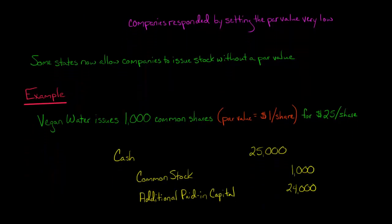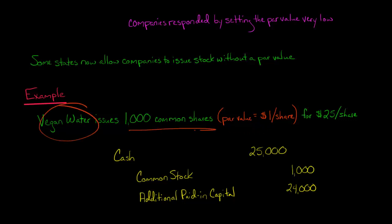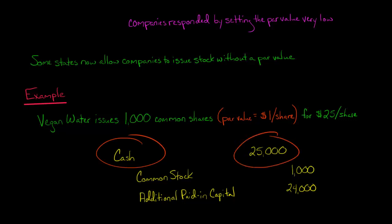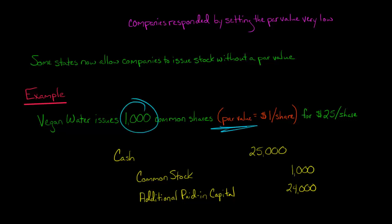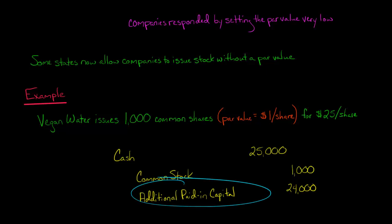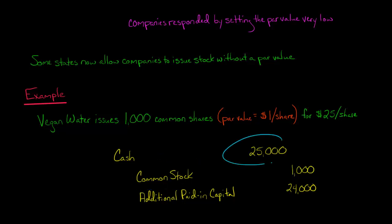Now I want to show you the journal entries either way. First, if you issued stock that had a par value — let's say Vegan Water issues 1,000 common shares of stock for $25 a share, so the company is receiving $25,000. They're going to debit the cash account for $25,000. They'll credit common stock for the par value times the number of shares: 1,000 times $1 par value equals a $1,000 credit to common stock. Then there's another credit of $24,000 to additional paid-in capital to make debits and credits balance. Additional paid-in capital is a stockholders' equity account, just like common stock. So total assets go up by $25,000 and total equity goes up by $25,000.